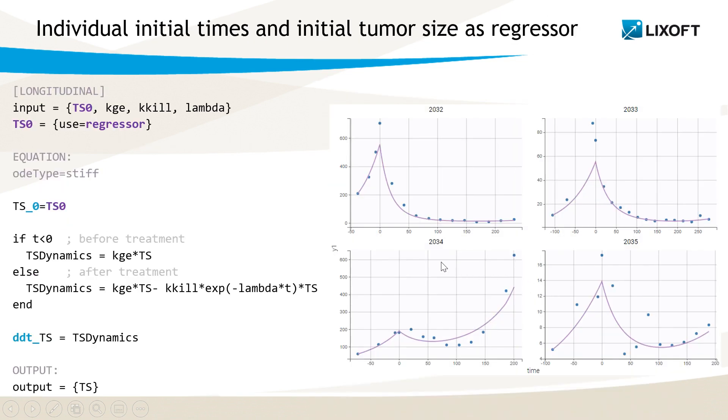This can be especially useful for instance when modeling tumor size data, such as in this example. Here the treatment starts at time 0 for all individuals, but the initial measurement of tumor size before the treatment is at different times. The initial tumor size, called TS0,